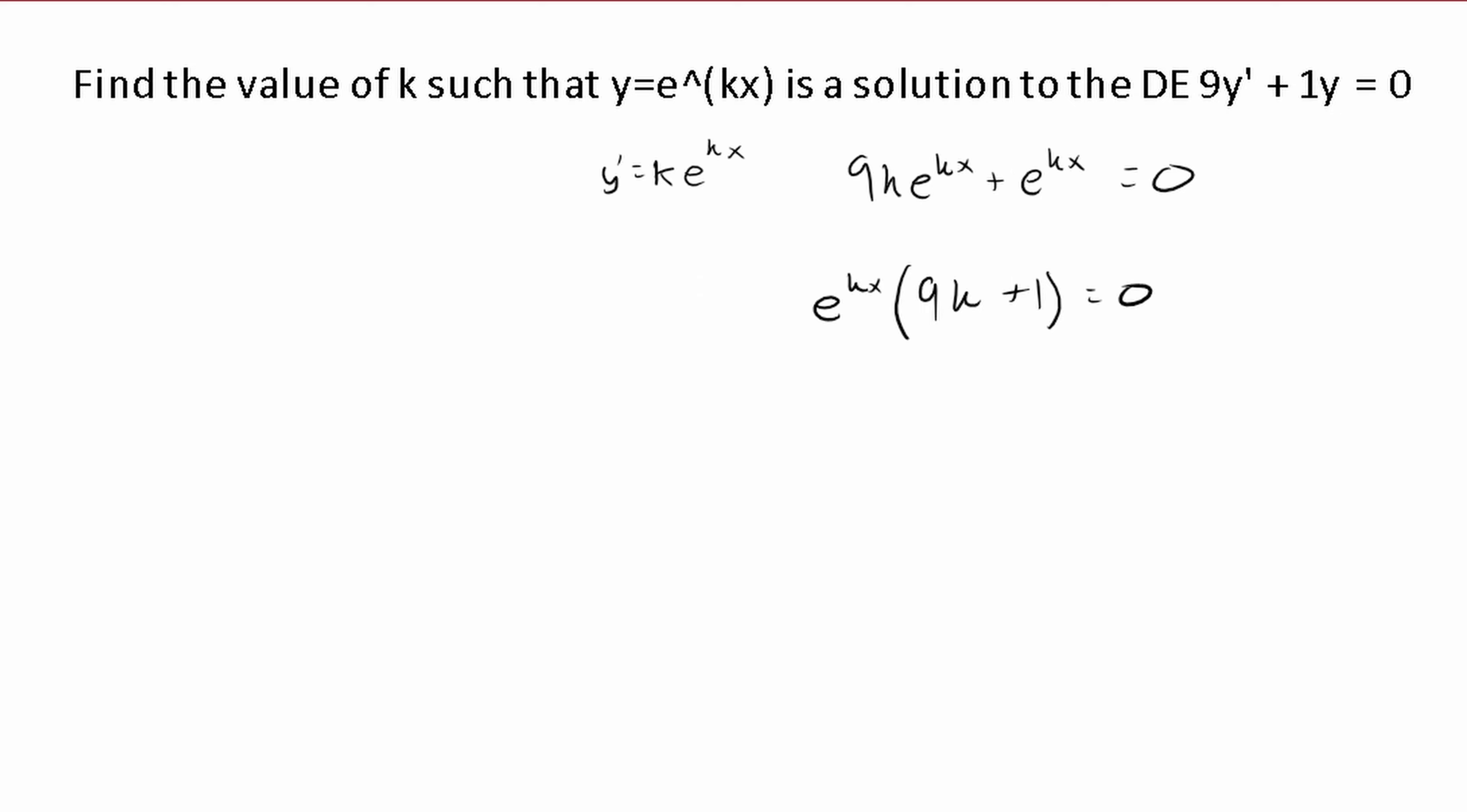Now this e^(kx) is always going to be something, always positive, never zero. So instead, we're going to look at what we have inside here. We want this to be 0.